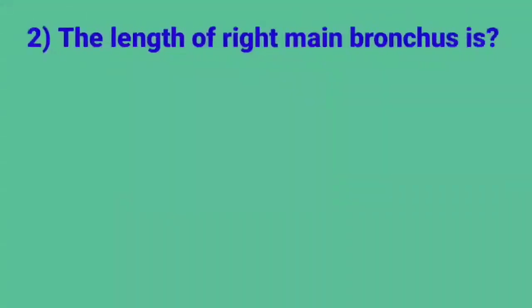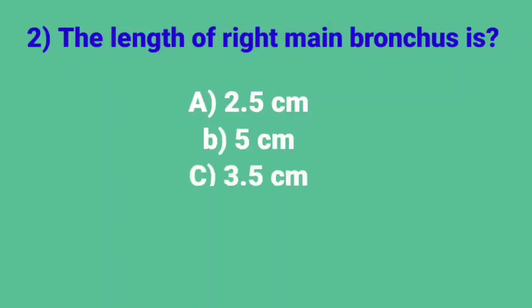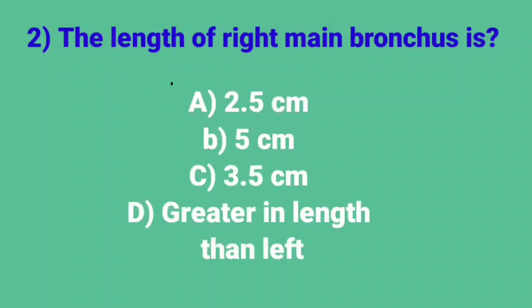Question number 2: The length of right main bronchus is? Correct answer is option A, 2.5 cm.